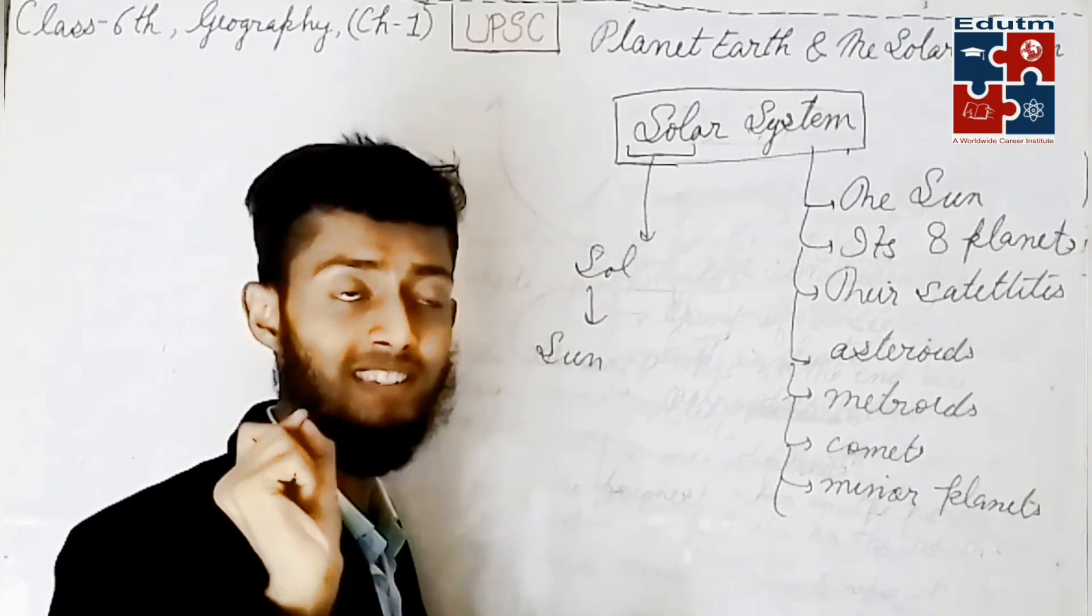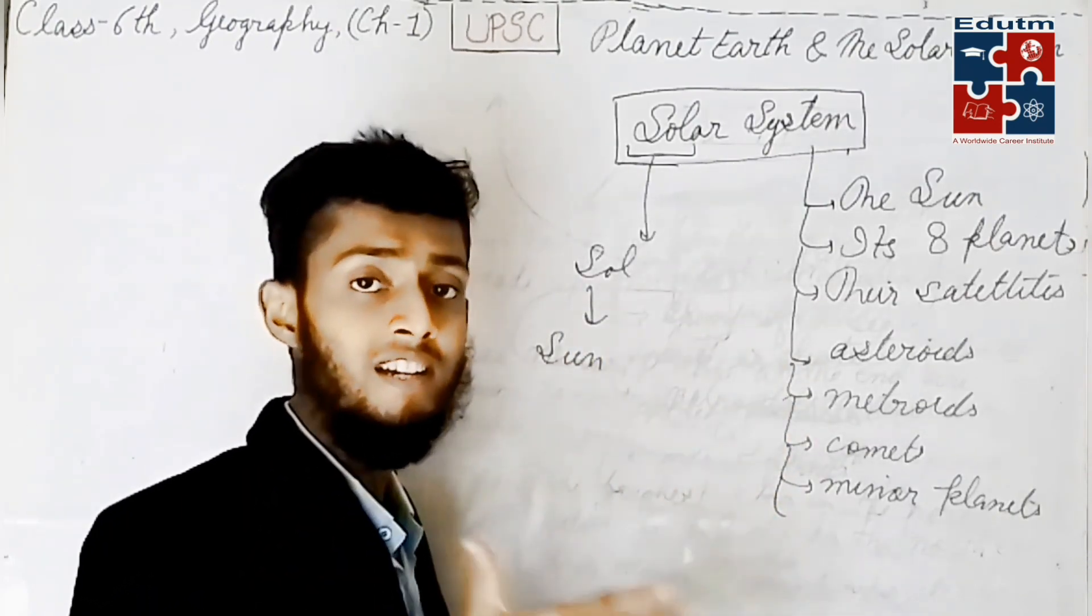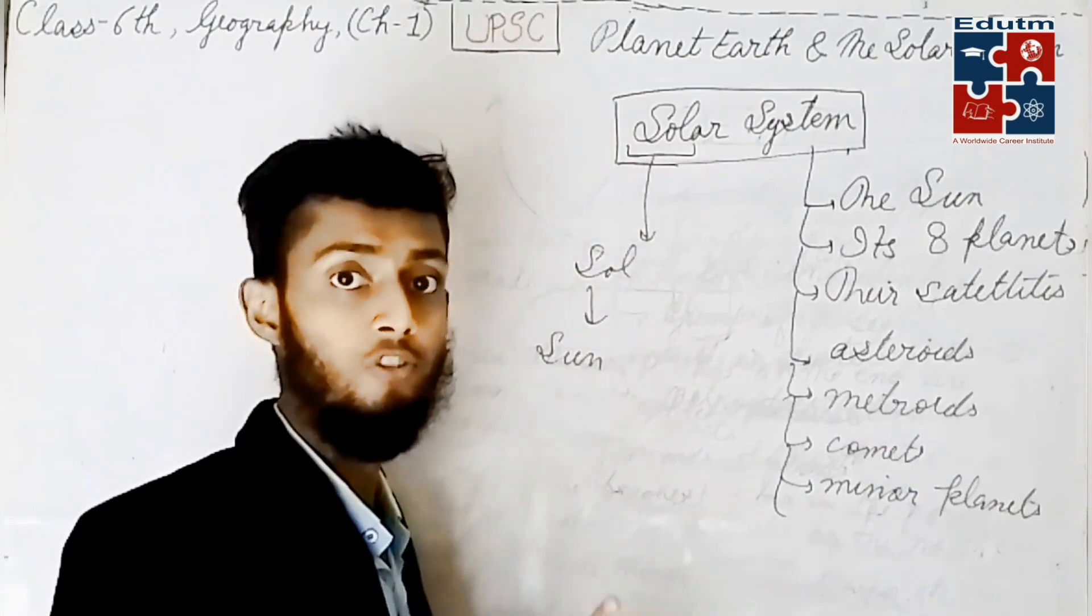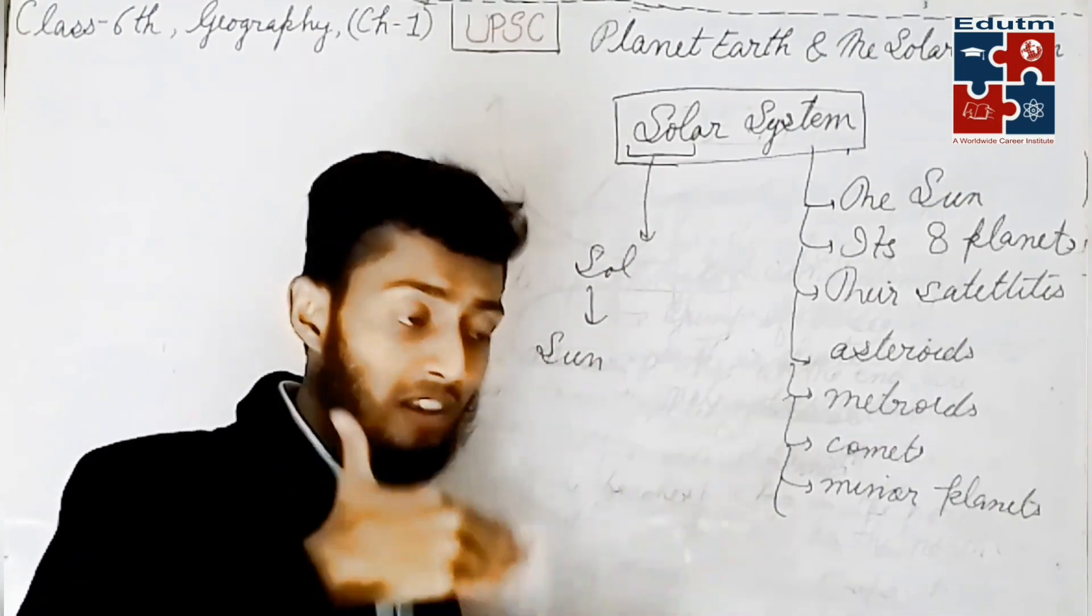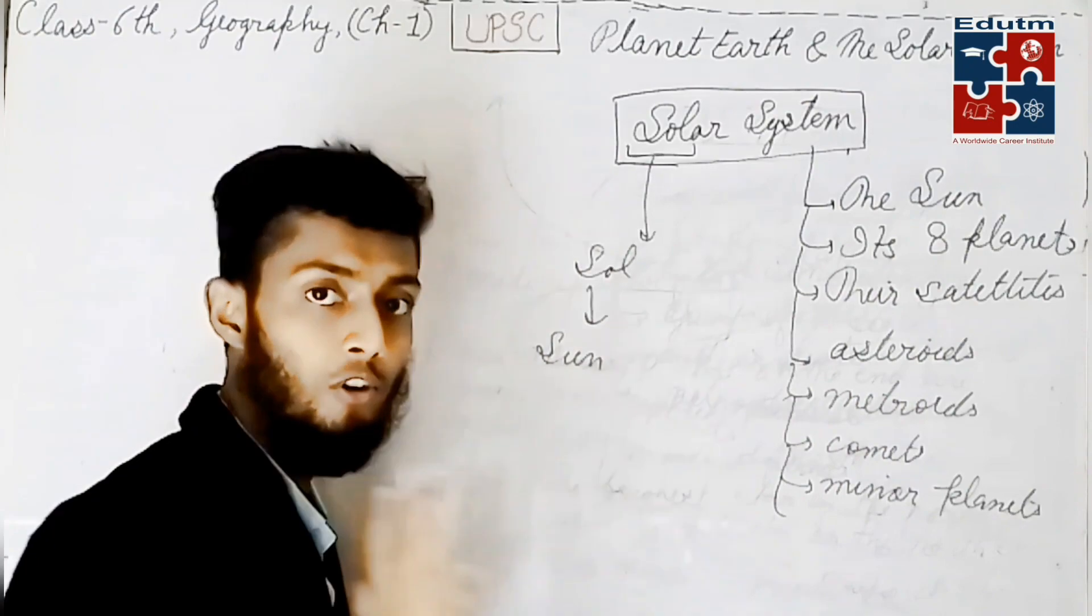Like Pluto. Have you seen the name Pluto? Pluto was considered as a planet, but later it was considered as a minor planet, not a real planet. It is now considered as a minor planet. So we will discuss everything in detail about them.